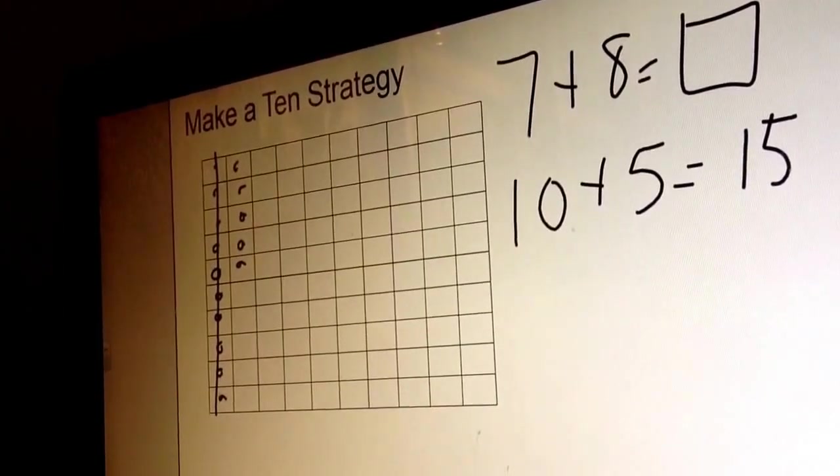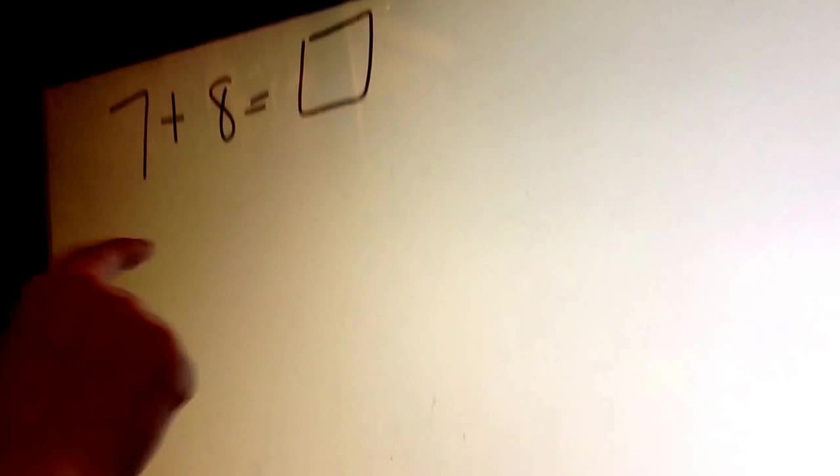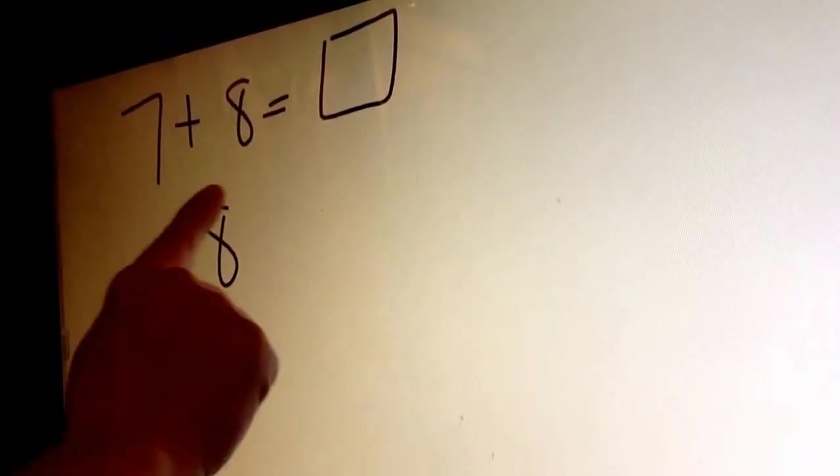Likewise, you can also do it without the grid. If we take that same problem, 7 plus 8 equals box, and we start with the larger number, 8, and then we add 7 circles.